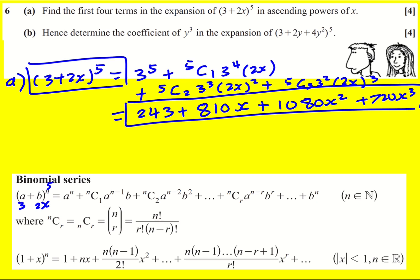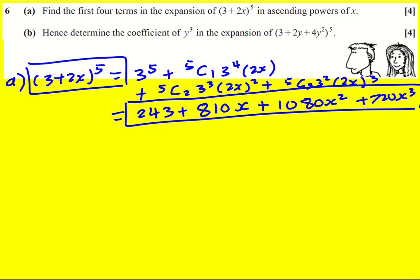It says hence determine the coefficient of y^3 in this expansion. This is actually a trinomial because there are three terms. But 'hence' and the fact that it looks very similar means we're going to use our result from part A to help.